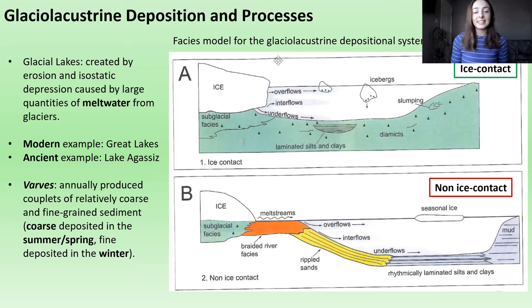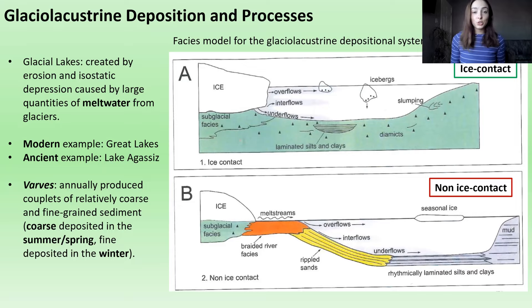Glacial lakes are created by meltwater from a glacier, either from erosion by the glacier or isostatic depression caused by large quantities of meltwater. Examples include the Great Lakes, and ancient examples include Lake Agassiz, located in Canada and the northern U.S. These lakes can be associated with glacial sediment in two different ways: ice contact and non-ice contact depositional systems.